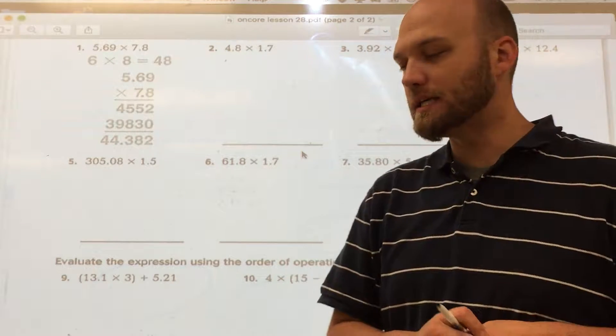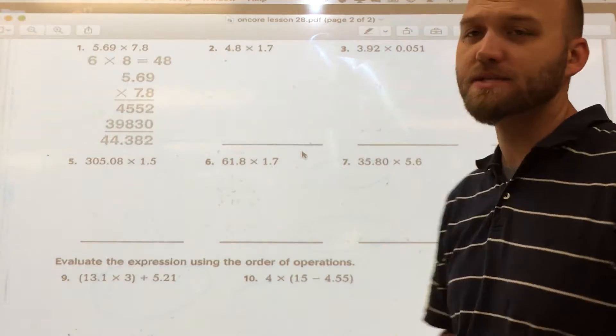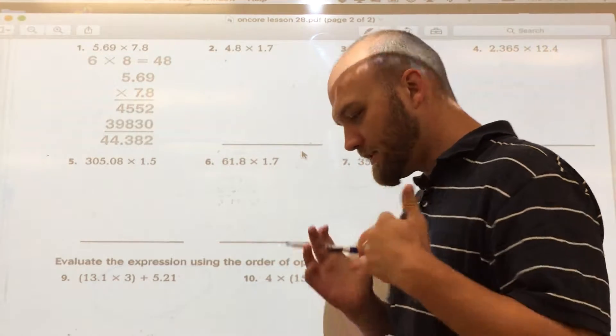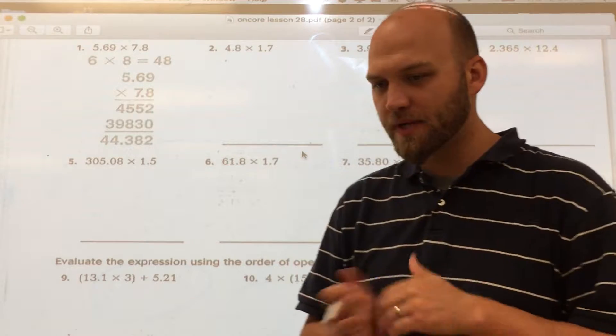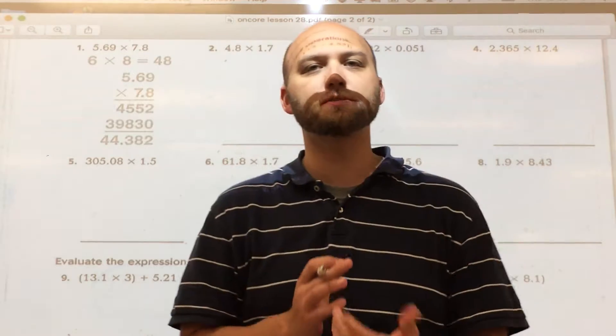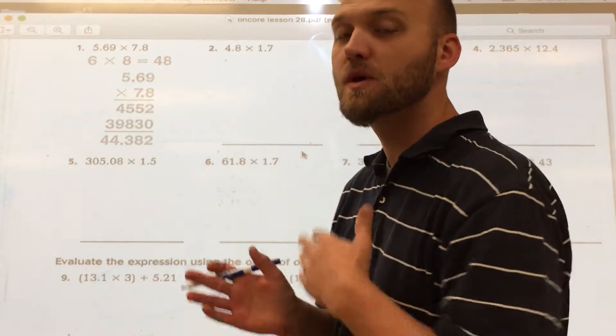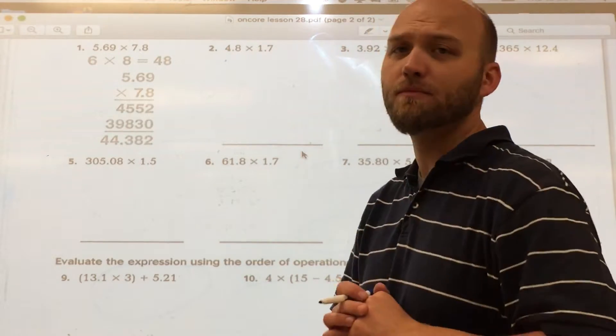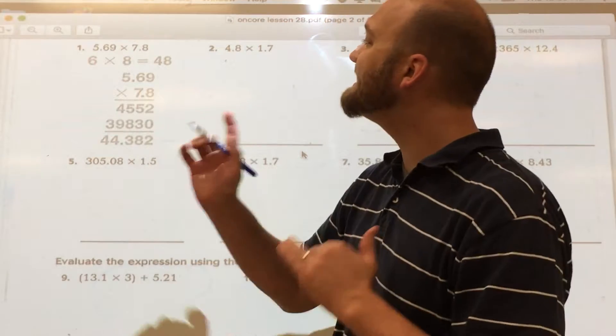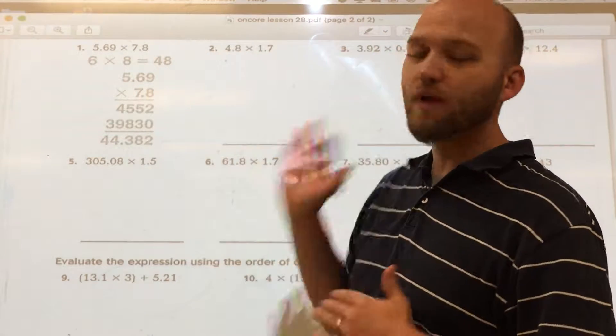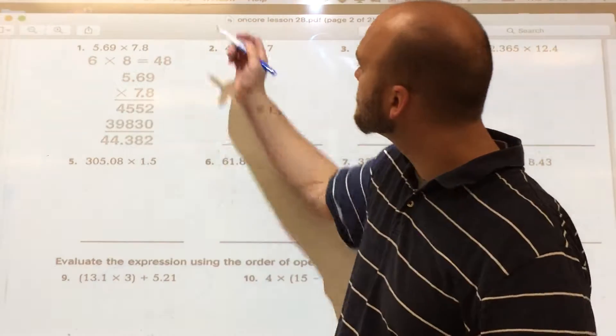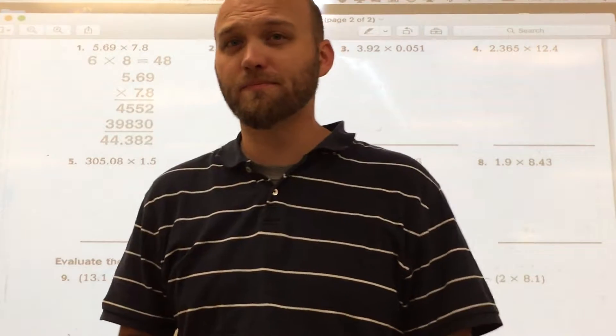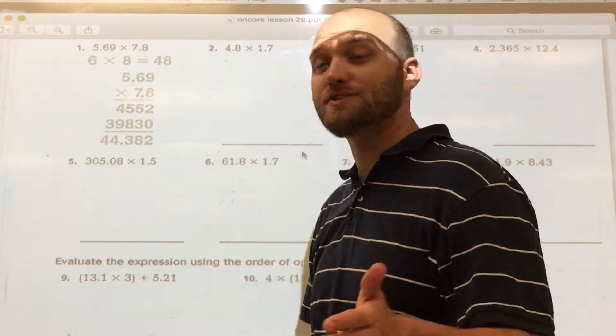Encore lesson 28. We're talking about multiplying with decimals and again, some more review, but the question that we really have is we can multiply with multiple digits, but when we multiply with decimals, we need to make sure that we understand where a decimal goes at the end. And I have a very simple rule for this. However many digits to the right of a decimal in your problem is how many you'll have in your answer.